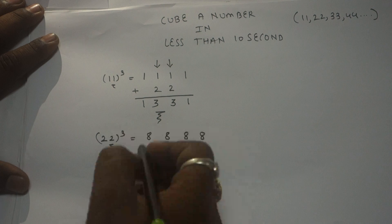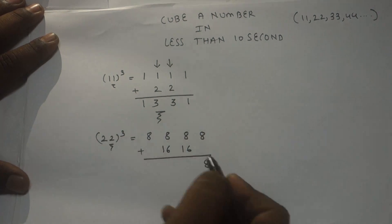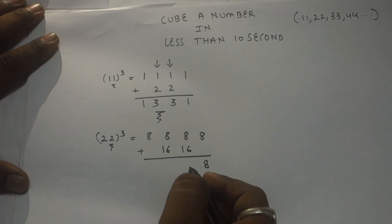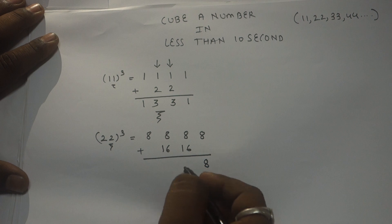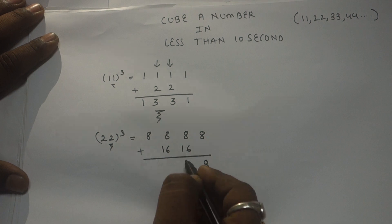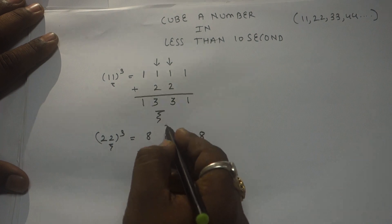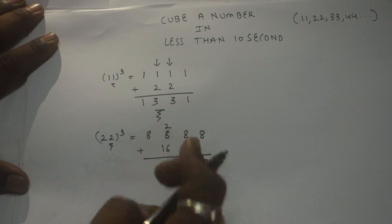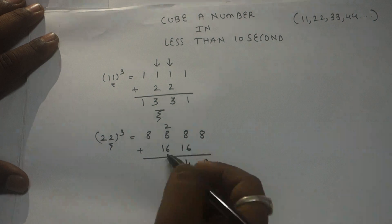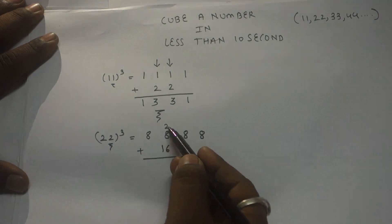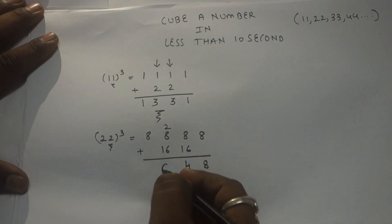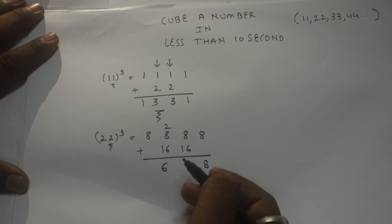Step three: add the numbers. 8 + 16 + 8 = 24. We cannot write 24 directly, so write 4 and carry 2 forward. Next: 16 + 8 = 24, plus 2 carry = 26. Same rule — cannot write 26 directly, so write 6 and carry 2 forward.